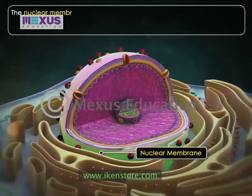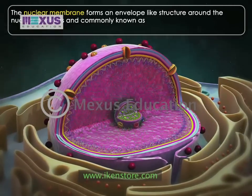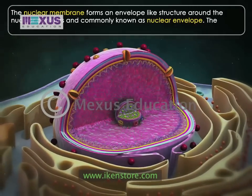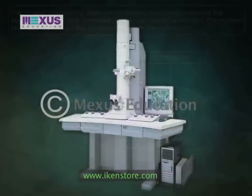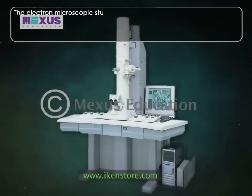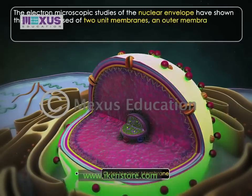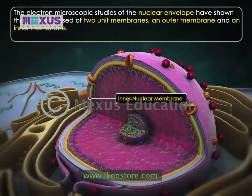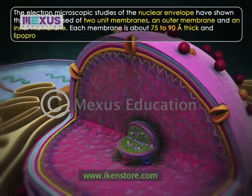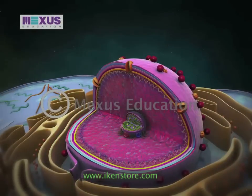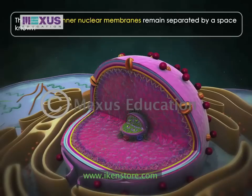The nuclear membrane forms an envelope-like structure around the nuclear contents and is commonly known as the nuclear envelope. The nuclear envelope separates the nucleoplasm from the cytoplasm. Electron microscopic studies have shown that it is composed of two unit membranes: an outer membrane and an inner membrane. Each membrane is about 75 to 90 angstroms thick and lipoproteinous in nature. The outer and inner nuclear membranes remain separated by a space known as perinuclear space.